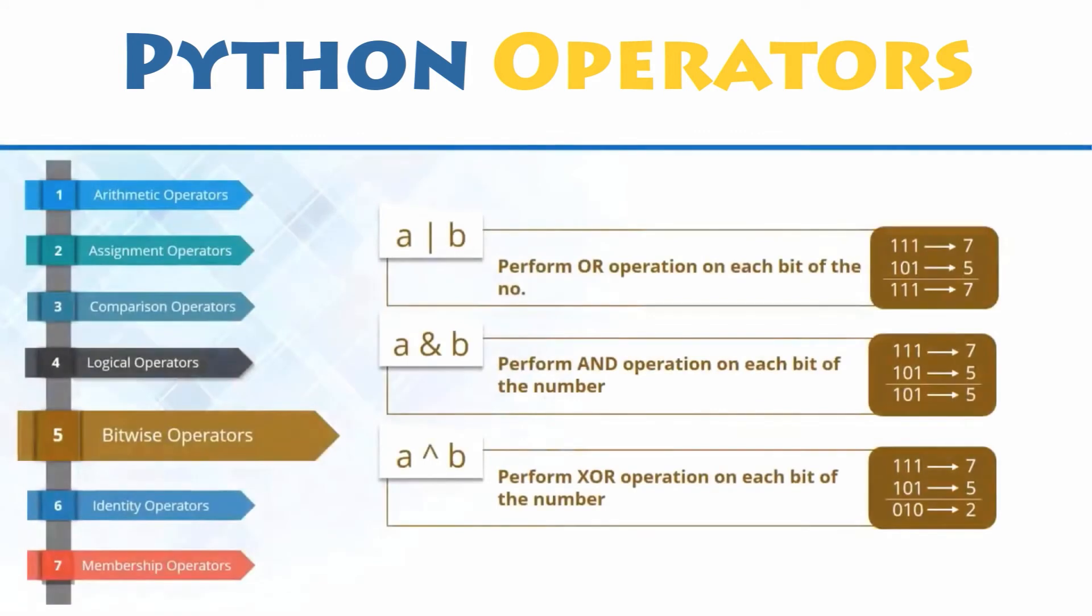Bitwise operators. Let's move forward and look at bitwise operators which are similar to logical operators but they treat operands as sequences of binary digits and operate on them bit by bit. For example, 5 is 101 in binary form and 7 is 111.